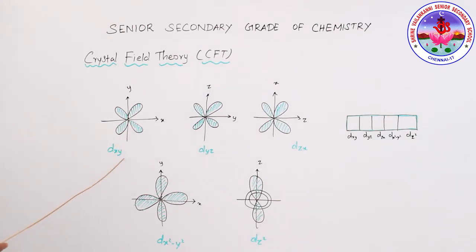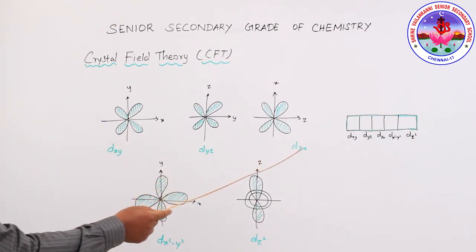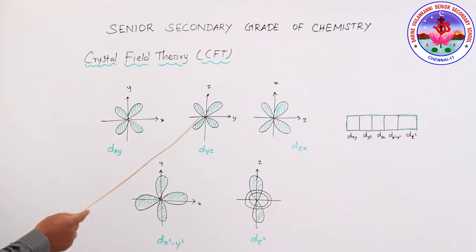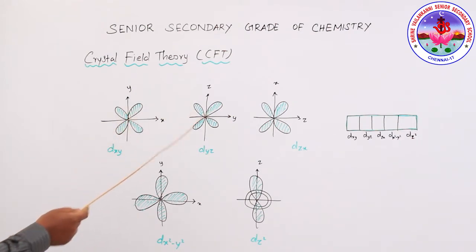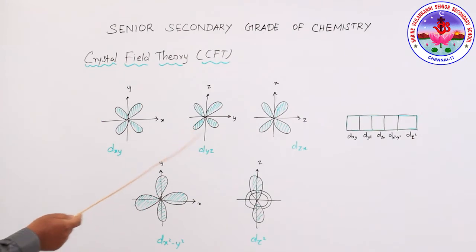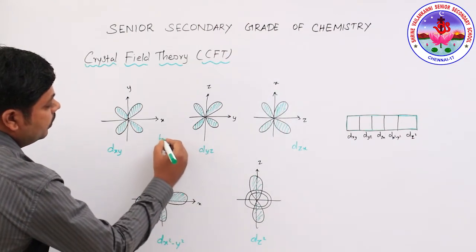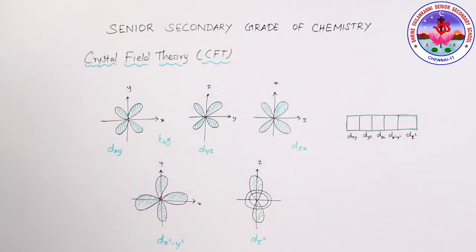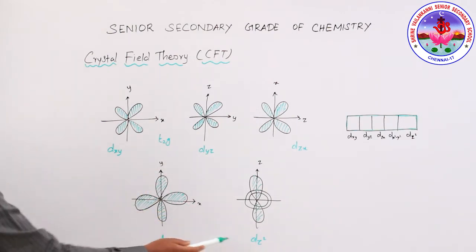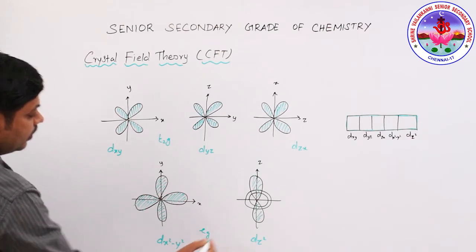Looking at Dxy, Dyz, and Dzx — their lobes are present between the axes. These are called T2g orbitals. Then for Dx²−y² and Dz², the lobes are along the axes. These are called Eg orbitals.